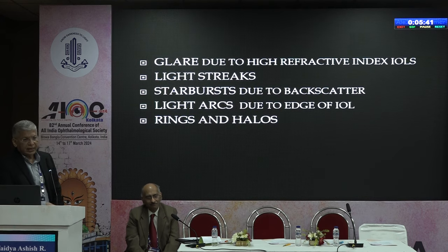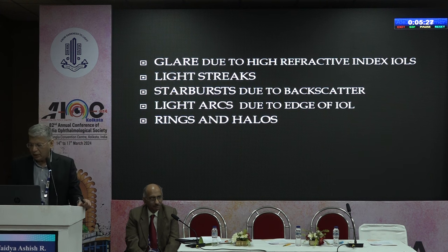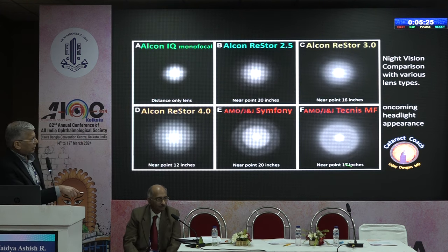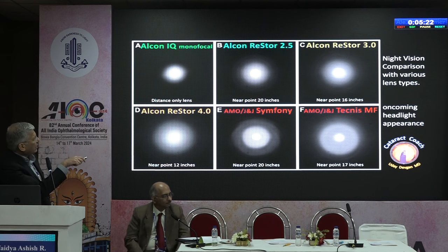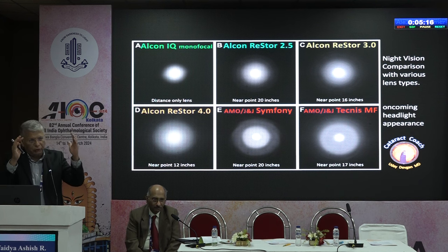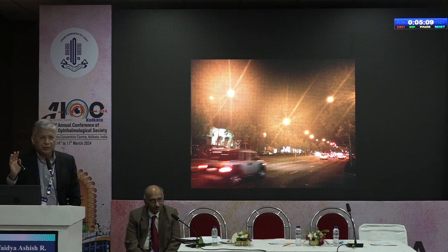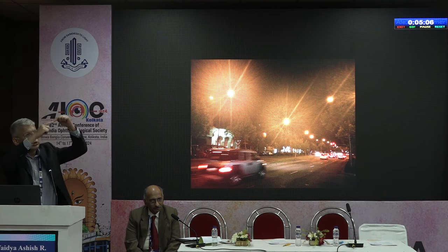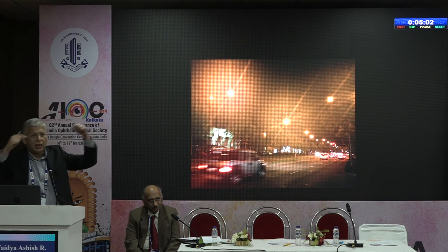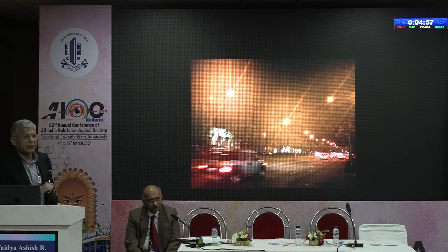You can have glare from high refractive index IOLs, described as light streaks, star bursts due to backscatter, light arcs from the edge of the IOL, rings and halos. Sometimes patients looking through a windshield at night see scatter around each light — this is a normal phenomenon but can be misinterpreted as a flash.